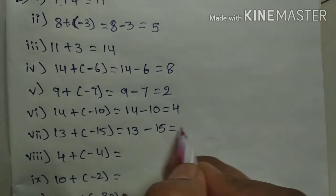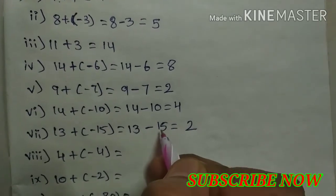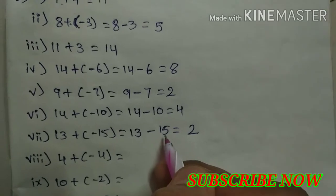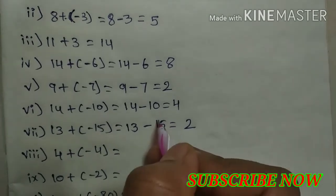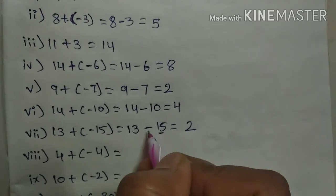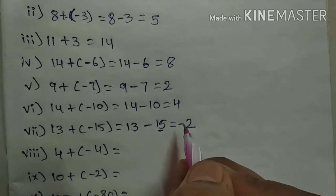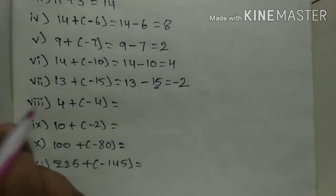So first, as usual, do subtraction: 15 minus 13 is 2. After subtraction, which one is the bigger number? 15 is the bigger one. Bigger number having which sign? Negative. So write negative here—minus 2.